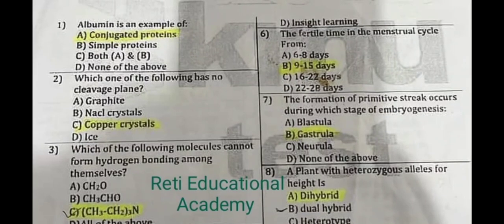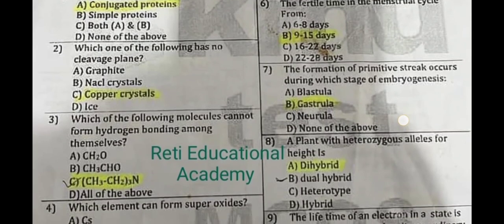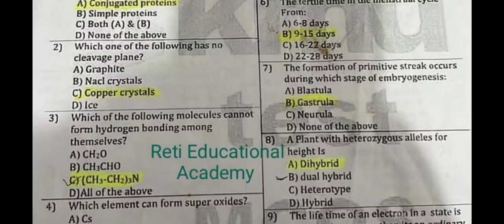Question number 1: Albumin is an example of — the correct answer is A: conjugated proteins. Question number 2: Which one of the following has no cleavage plane? A: graphite, B: nickel crystals, C: copper crystals, D: ice.